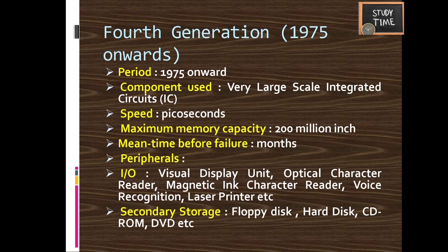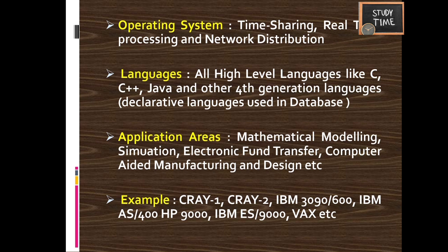Period: 1975 onwards. Component: Very Large Scale Integrated circuits (VLSI). Speed: picoseconds. Maximum memory capacity: 200 million inches. Mean time before failure: months. Input/output: visual display unit, optical character reader, magnetic ink character reader, voice recognition, laser printer. Secondary storage: floppy disk, hard disk, CD-ROM, DVD. Operating systems support time-sharing and real-time processing. Languages: all high-level languages like C, C++, Java. Applications: mathematical modeling, electronic fund transfer, computer-aided manufacturing and design. Examples: CRAY-1, CRAY-2, IBM series.